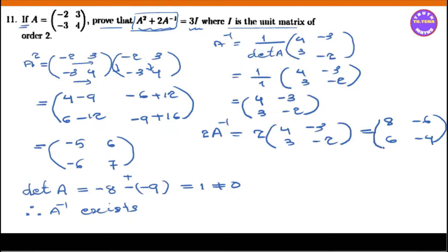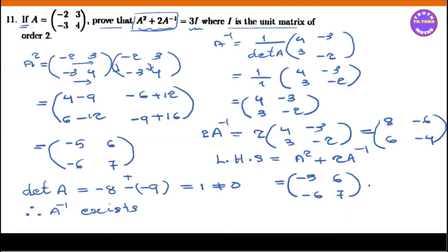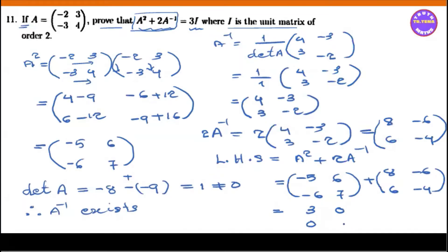Following the left-hand side: A squared plus 2A inverse equals the matrix minus 5, 6, minus 6, 7, plus 2 times the inverse. Computing: minus 5 plus 8 equals 3; 6 minus 6 equals 0; minus 7 plus 8 equals 0 (approximately); 7 minus 4 equals 3.